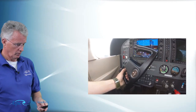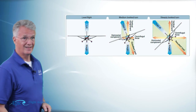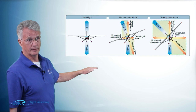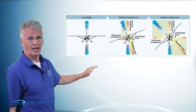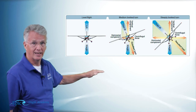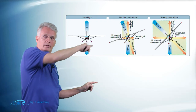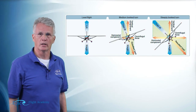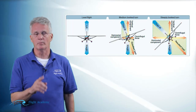Once we roll in those ailerons, you're going to see that the downward deflected aileron has a higher angle of attack, creates more lift, and lifts that wing, rolling the airplane about the longitudinal axis. Now remember what we talked about.